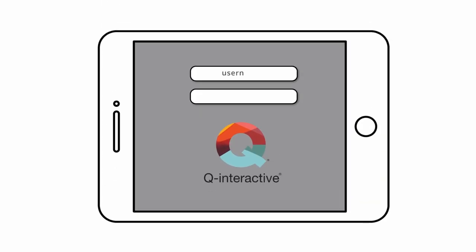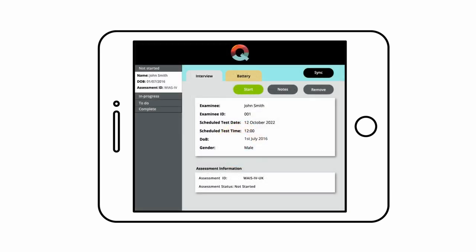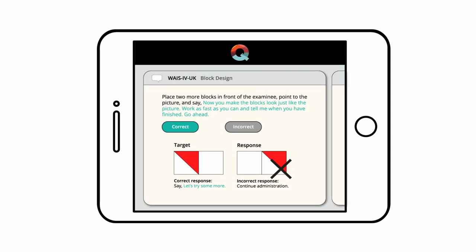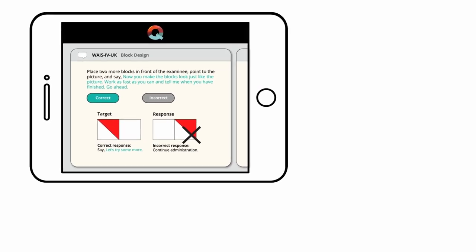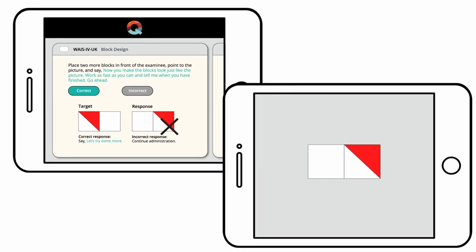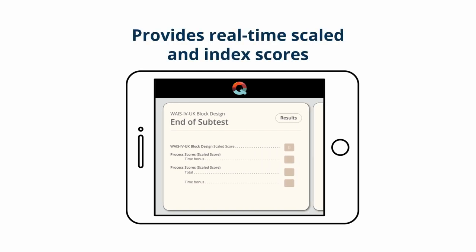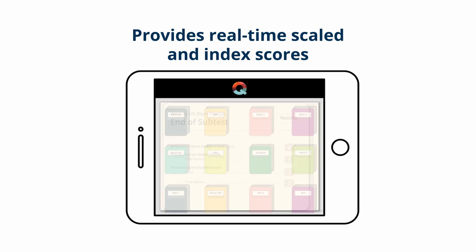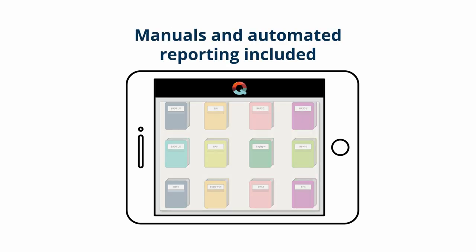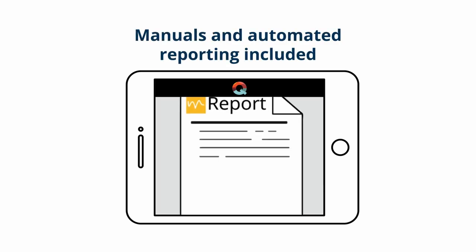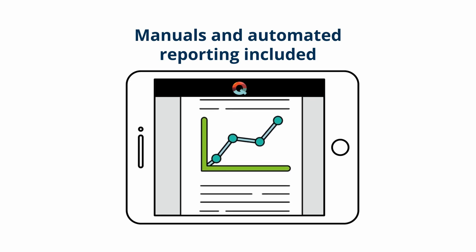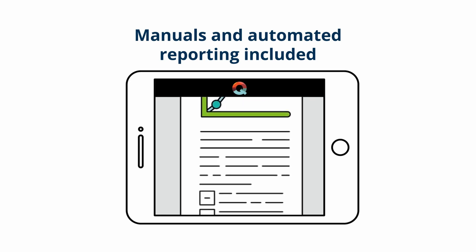Qinteractive is our innovative and integrated administration, scoring and reporting platform. Use an iPad to display stimulus items to your client, who will view these on a second iPad. Qinteractive will allow you to score each item as you go on the iPad, providing real-time scaled and indexed scores throughout the assessment, even if you're offline. Assessment manuals and unlimited automated reporting are also included with a Qinteractive license, giving you a complete digital assessment solution.